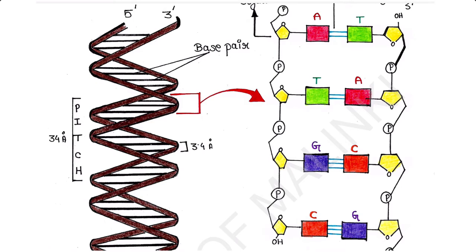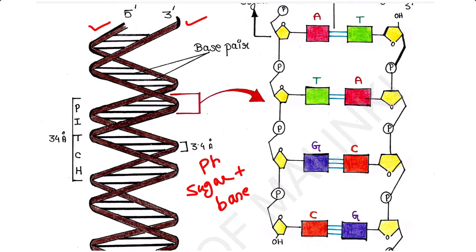DNA consists of two polynucleotide chains. Each chain consists of polynucleotides, meaning a huge number of nucleotides. A nucleotide consists of a sugar, a nitrogenous base, and a phosphate group.